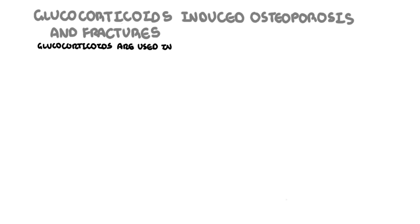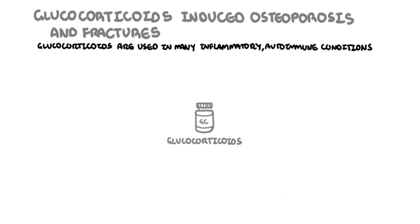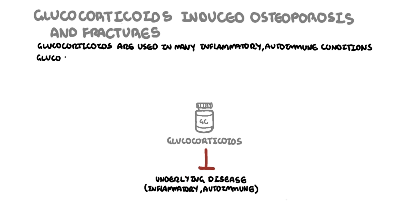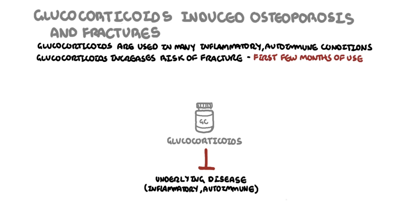Glucocorticoids are used in many inflammatory and autoimmune conditions. While being used to treat an underlying disease, glucocorticoids are associated with an appreciable risk of bone loss and increases the risk of fractures, which is actually more pronounced in the first few months of use.